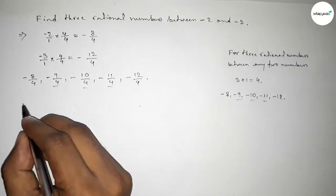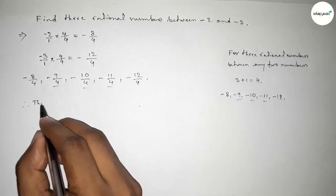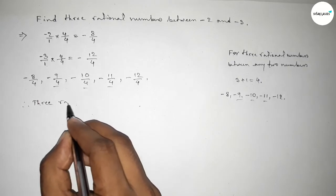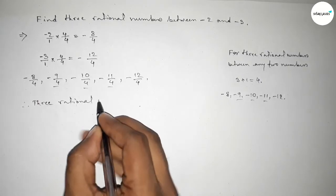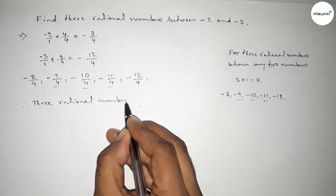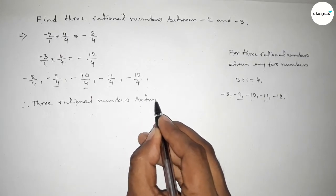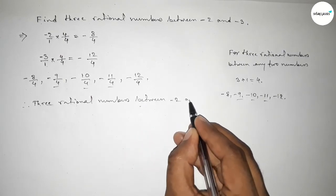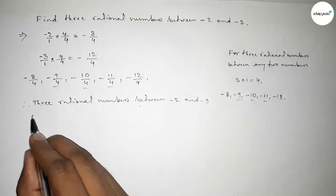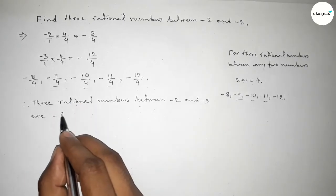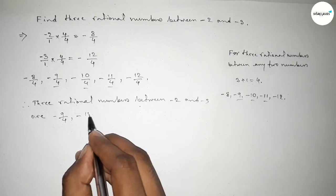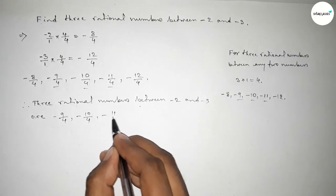Therefore, the three rational numbers between -2 and -3 are -9/4, -10/4, and -11/4.